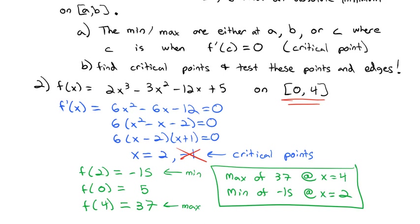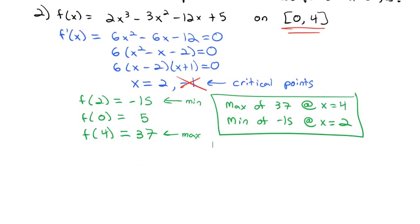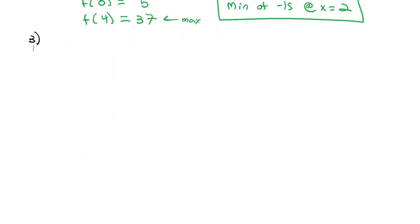We've identified the minimum and maximum using the Extreme Value Theorem for this function on this range. Let's try one more that might be a little more open. Let's see what happens when f(x) equals cosine squared of x on negative infinity to infinity. It's not really a closed interval, but we can still check the critical points to see if there are any minimums or maximums.